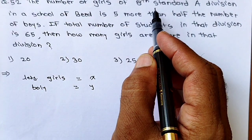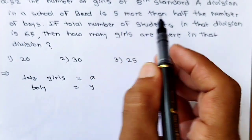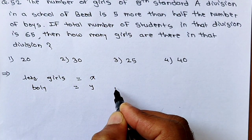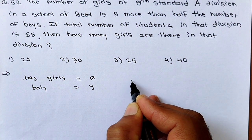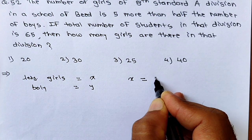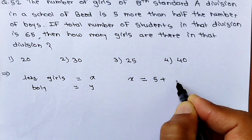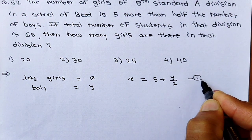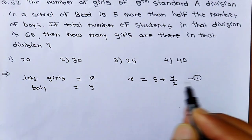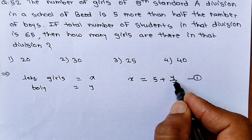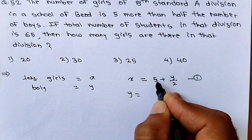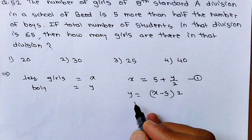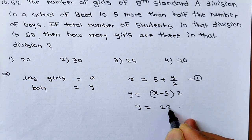From the first statement — number of girls is 5 more than half the number of boys — we form the equation: X = 5 + Y/2. From this equation, Y = 2X − 10. One more statement is given: total students = 65, meaning X + Y = 65.